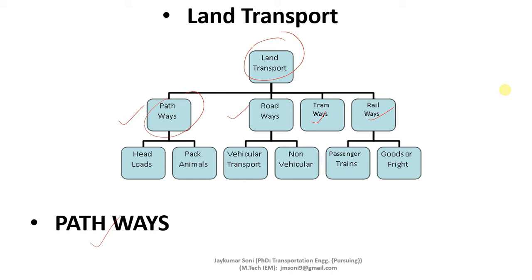Let us learn about land transport and pathways. These pathways are normally called as streets. They are mainly found in remote villages, forest areas, and hilly areas. Pathways are categorized into two parts: head loads and pack animals. Head loads means where human transport is possible — it is used in hilly areas where animals cannot reach but humans can.